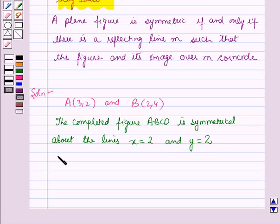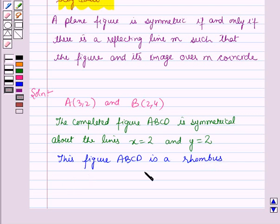And this figure ABCD is a rhombus whose vertices are A(3,2), B(2,4), C(1,2) and D(2,0).